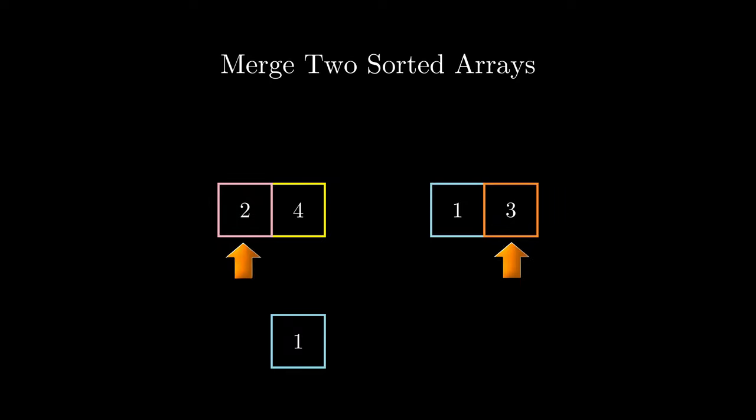Two is less than three, so we take that value and then increment the pointer. Three is less than four, so we take that value. And at this point, the pointer on this side can't increment any further. So we then just append the rest of what is pointed to by the other pointer. We're then left with a sorted array.